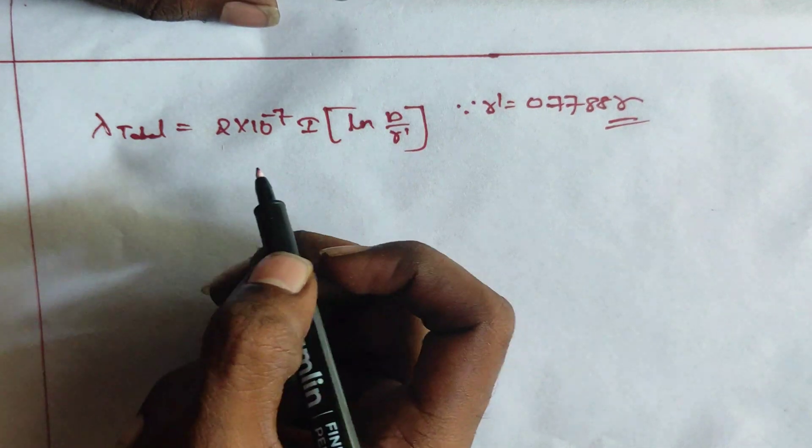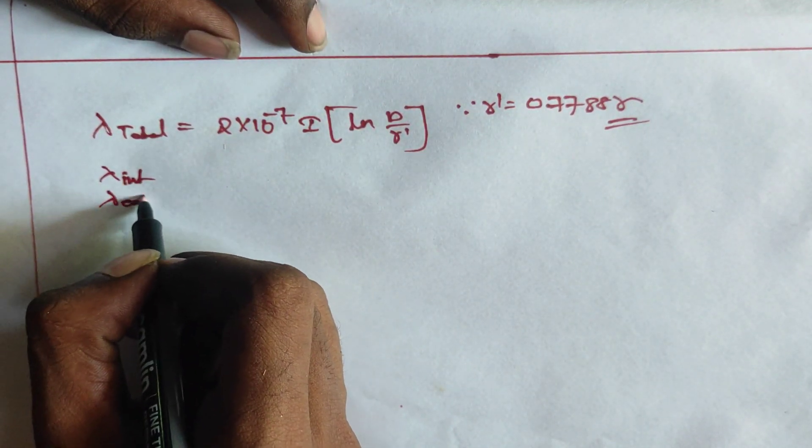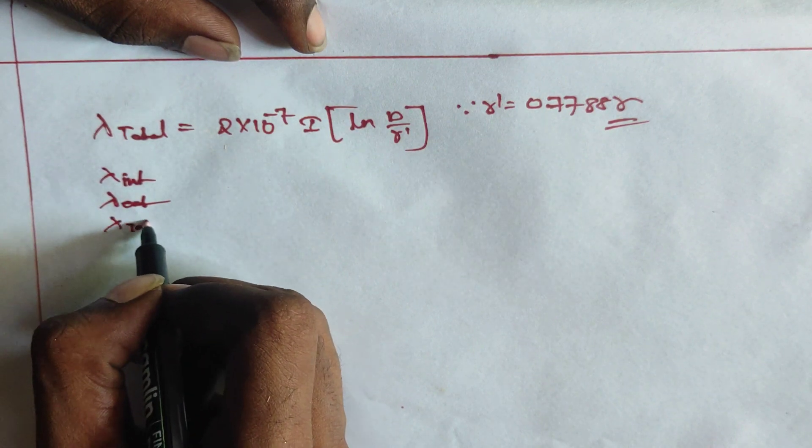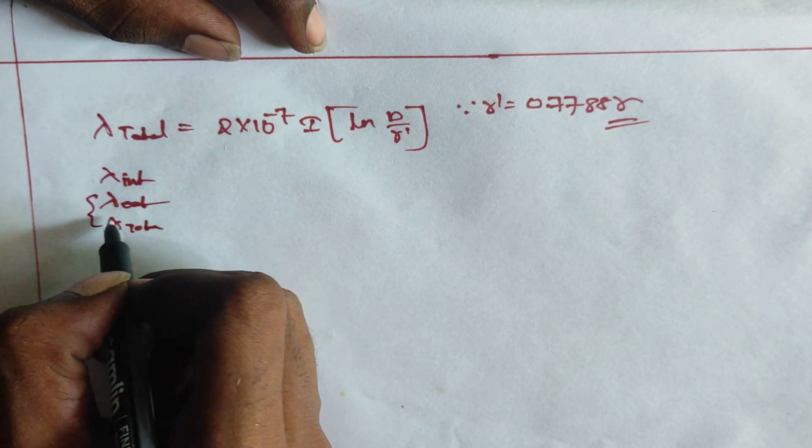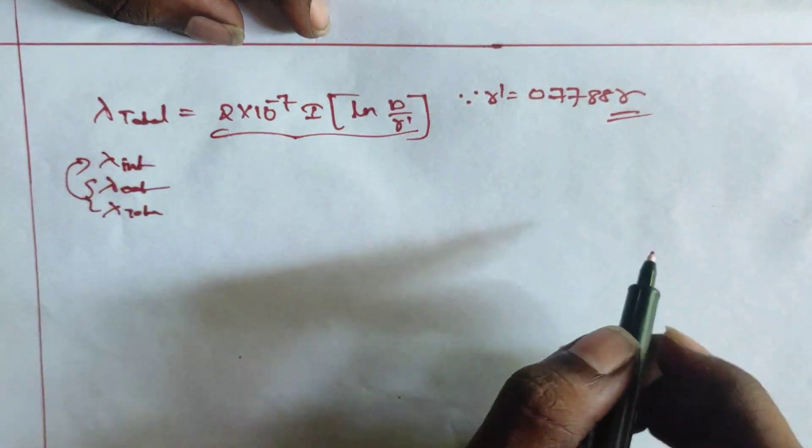So, within that video, we have derived the expression for lambda internal, lambda external, lambda total. From both these two things, we got this thing. And I am writing that thing only over here.